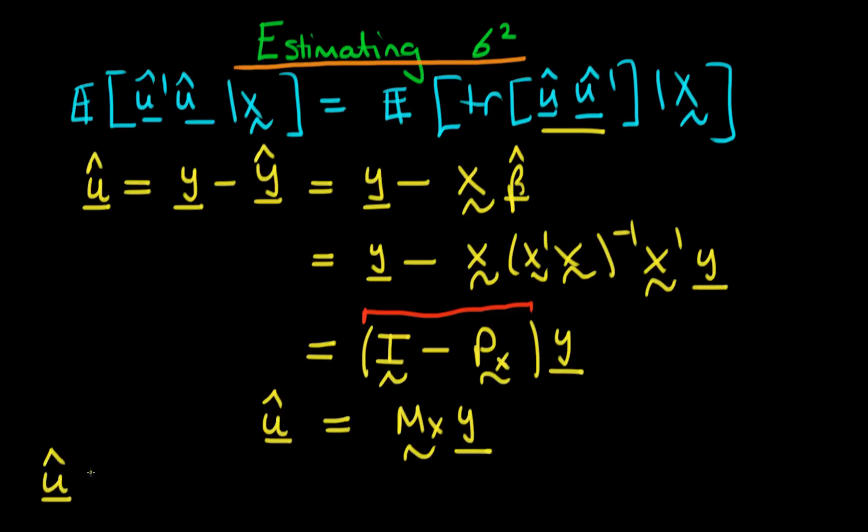u hat times u hat primed equals Mx times y. Taking the transpose of this, we transpose everything on the right hand side. When you take the transpose of a product, it's the same as the individual transposes in reverse order then multiplied, so it's y primed times Mx primed.